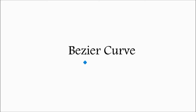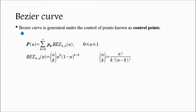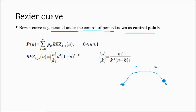In this video we will discuss about Bezier curves. A Bezier curve is generated under the control of points known as control points. If there are some points one, two, three, four, then such a curve will be generated which has the influence of those points. That is called a control point Bezier curve.